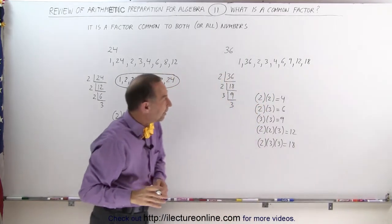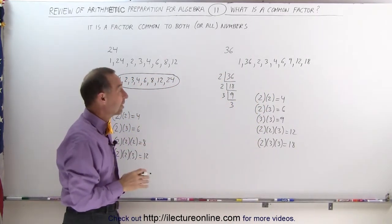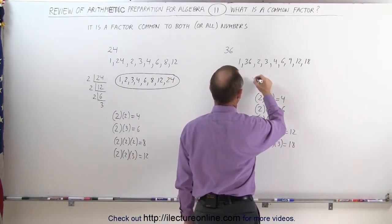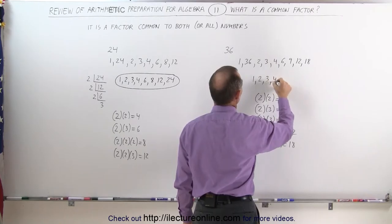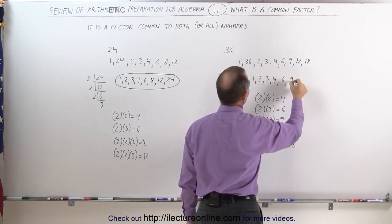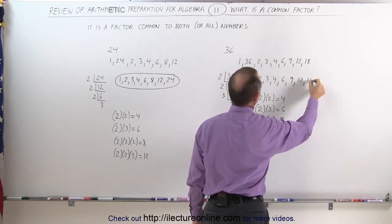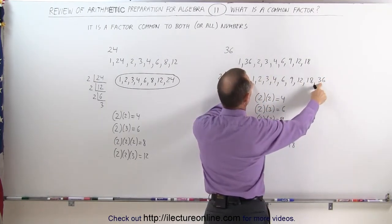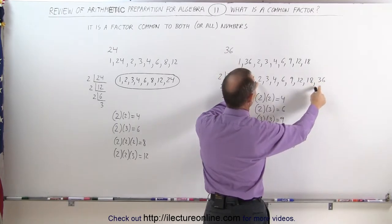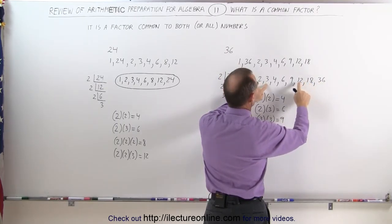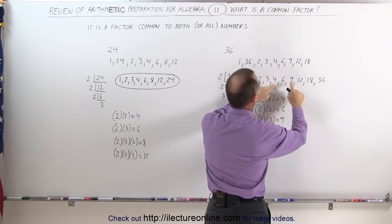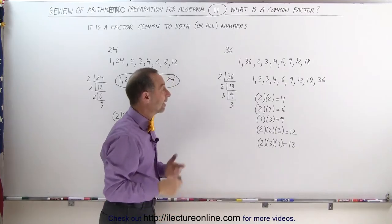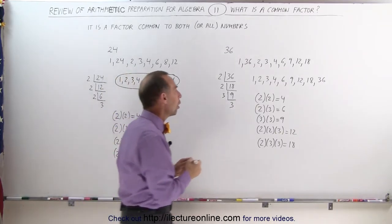To check if we missed any, let's line them all up from smallest to largest: 1, 2, 3, 4, 6, 9, 12, 18, and 36. Now we multiply the smallest times the largest: 1 times 36 is 36, 2 times 18 is 36, 3 times 12 is 36, 4 times 9 is 36. And we have one number left — we square it: 6 times 6 is 36. We've found all the factors.